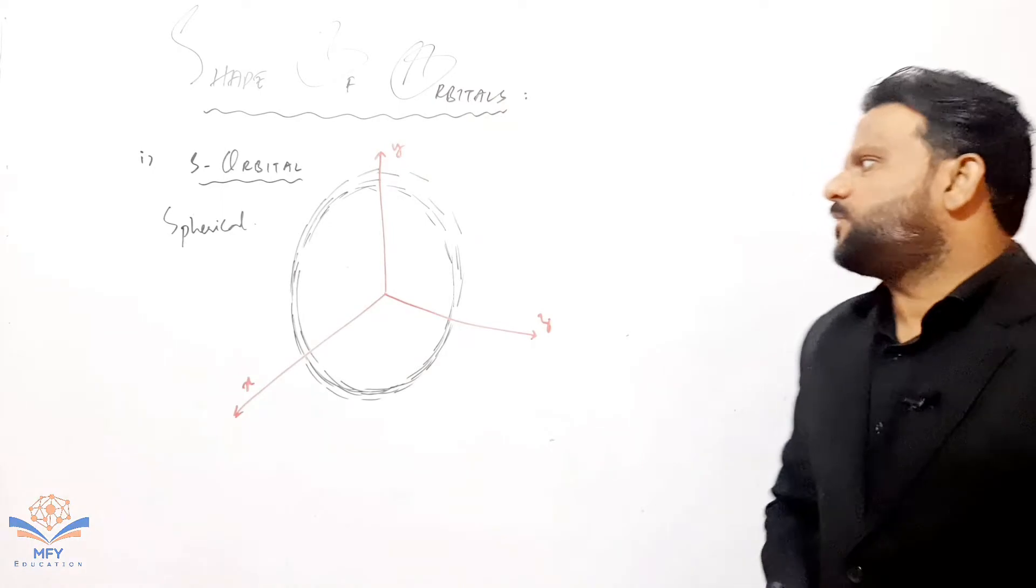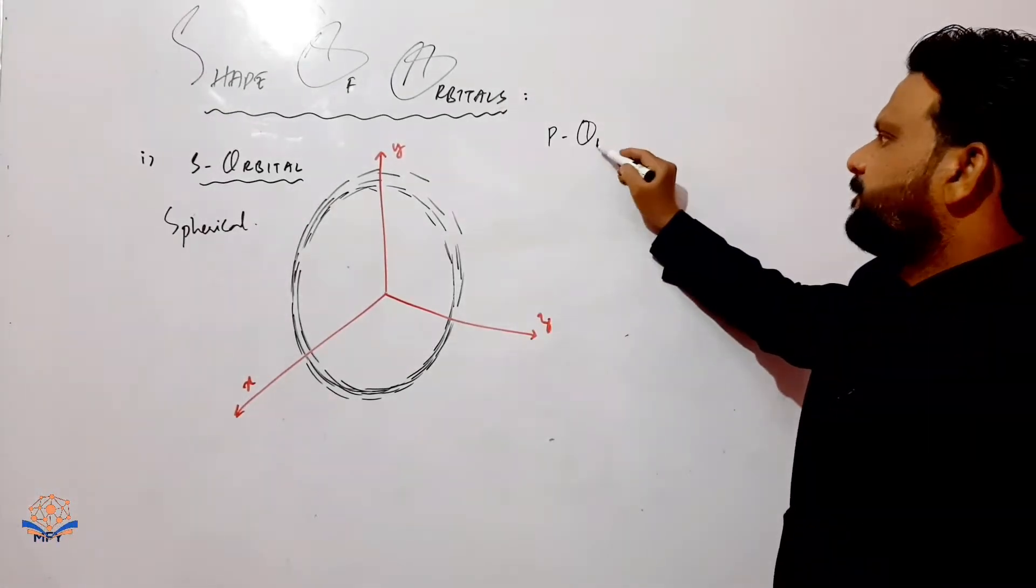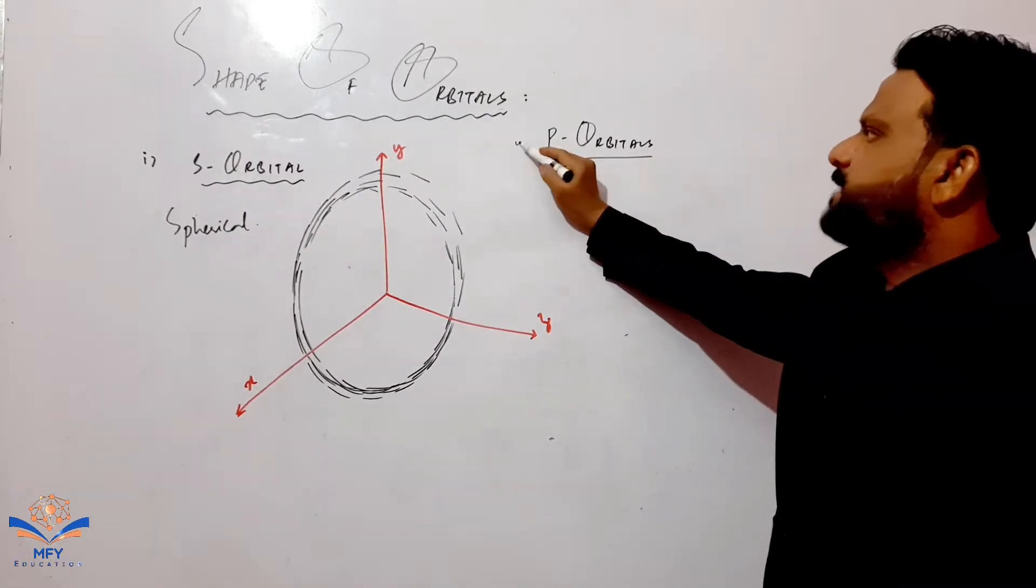And this is the structure of s orbital. Now we are going to move towards p orbital.